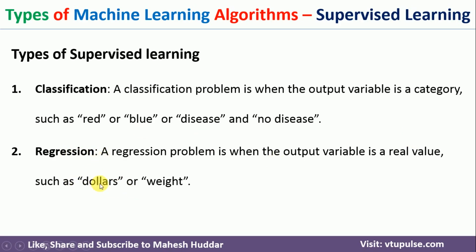For example, the target might be a dollar value such as 70, 75, or 80 — that is not categorical, it is a continuous value. Similarly, weight is not categorical; you get continuous weight values. Because the output is a continuous real value, these are called regression problems.